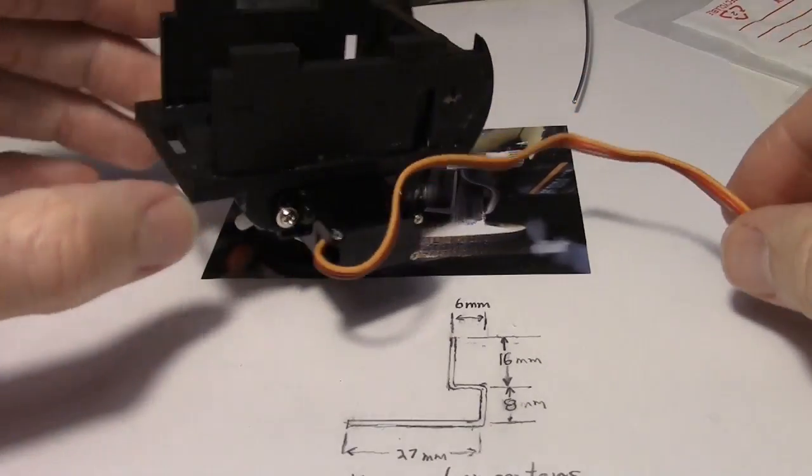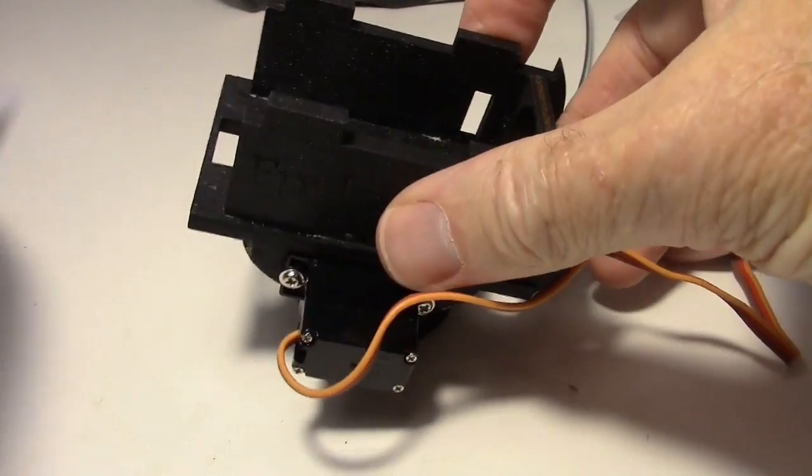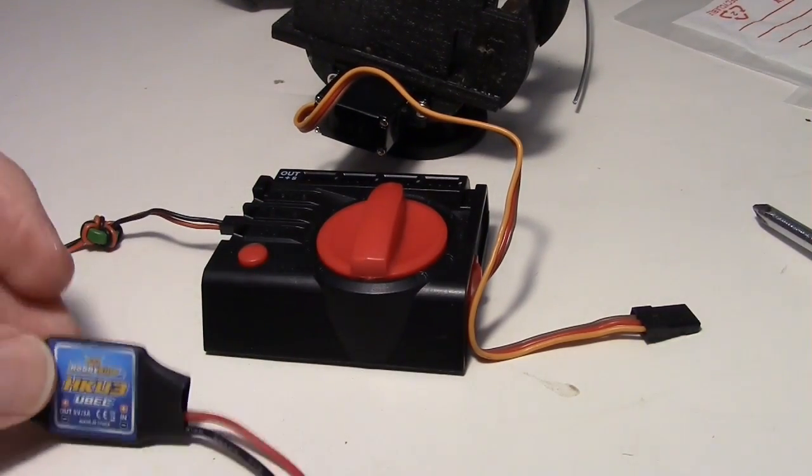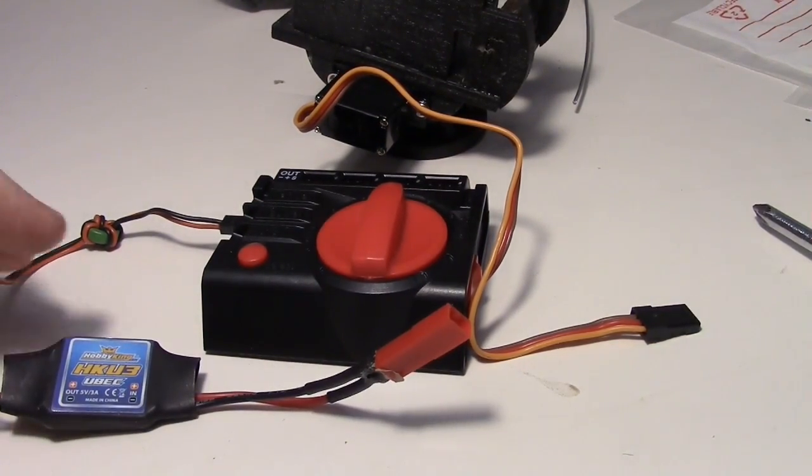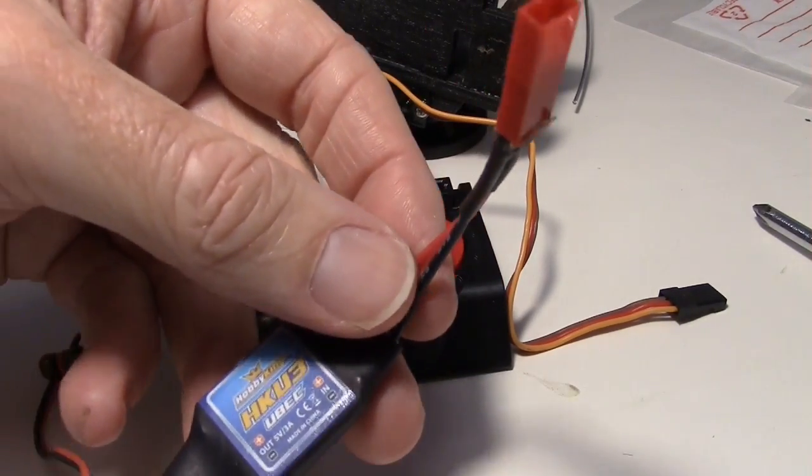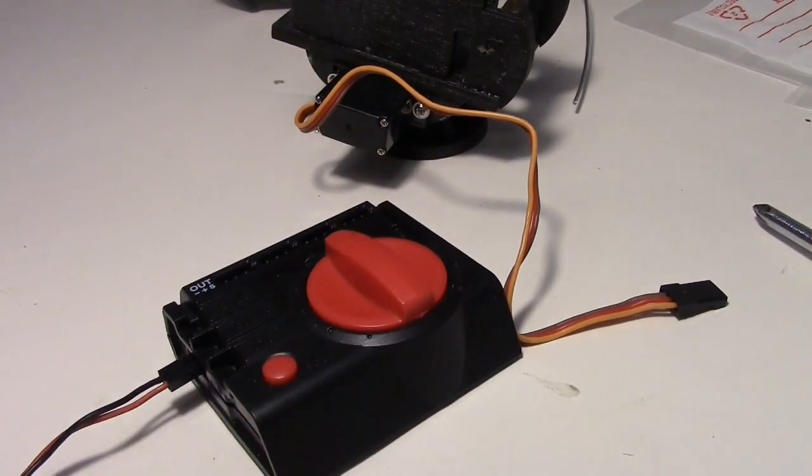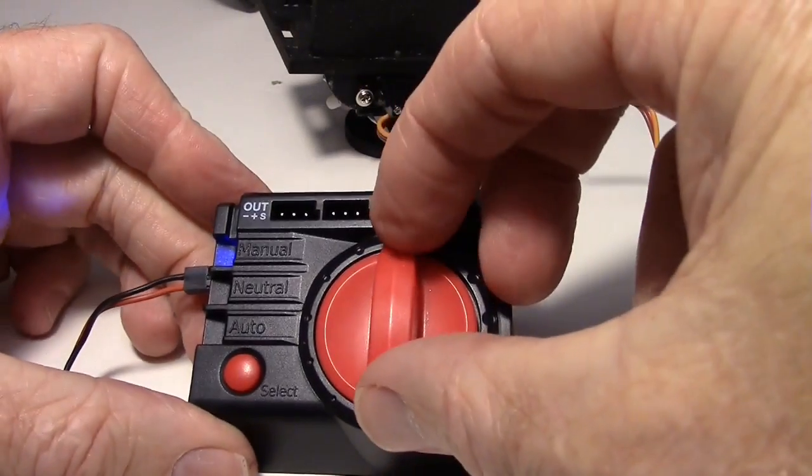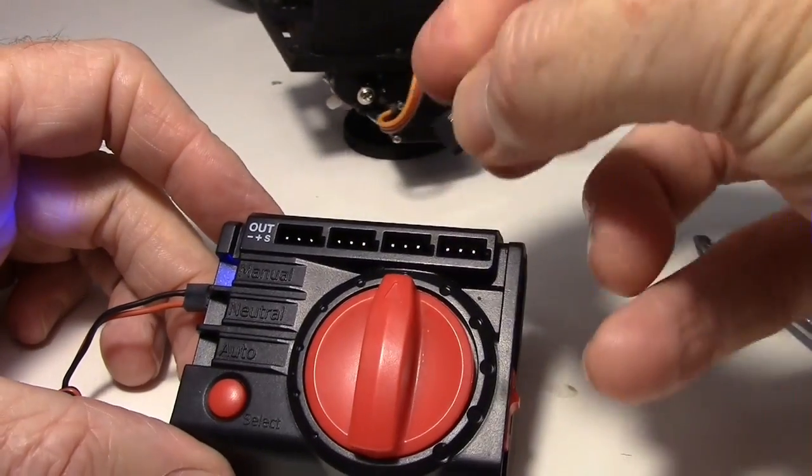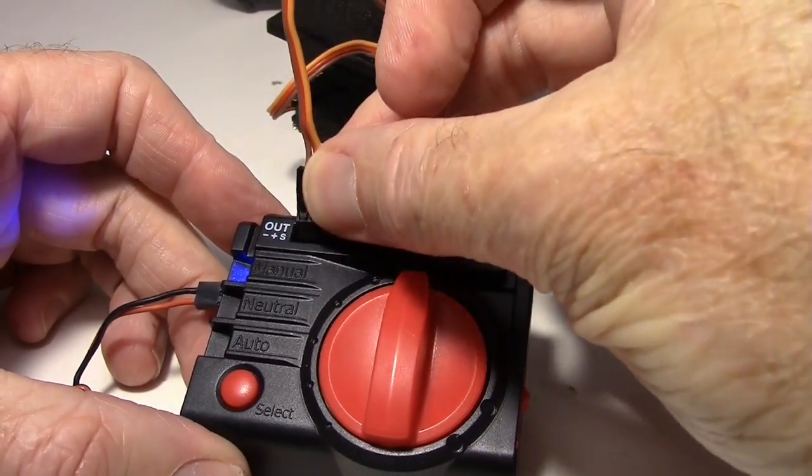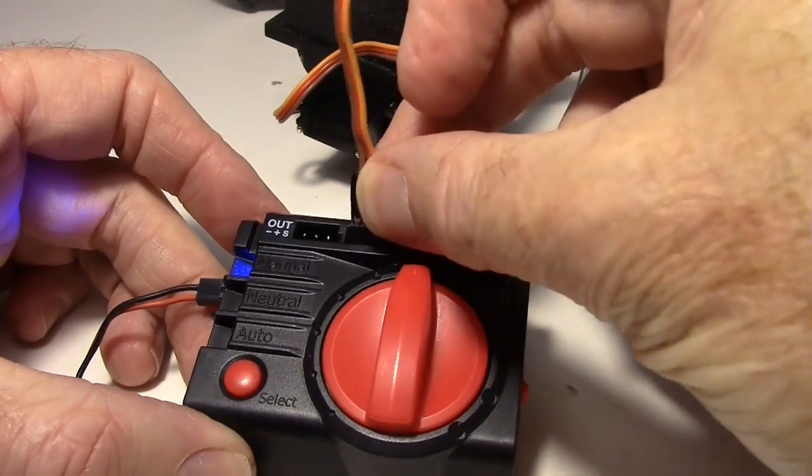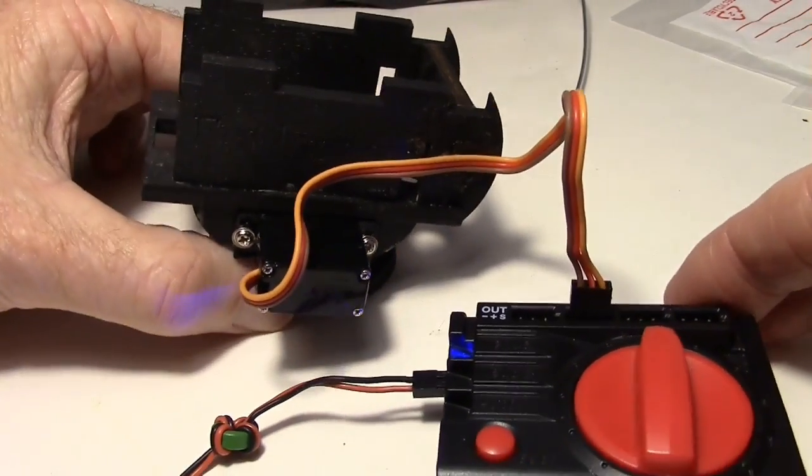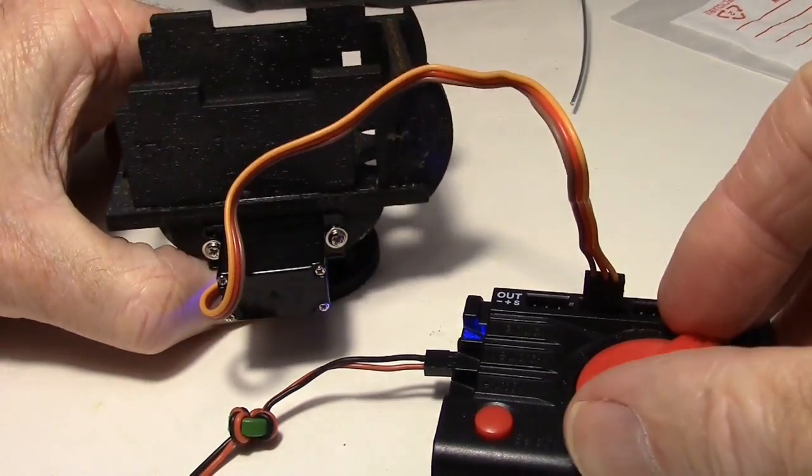Now let's hook it up to the hobby king servo tester right here. And all I do with that is I connect it up to a two cell battery, two cell lipo battery. I'm just going to plug that in off camera here. Now it's on. I'm going to put it in the center position and then just plug in the servo lead. It can go in any of these holes. So there it is right there. And when I turn this, you can see the pan tilt moving.